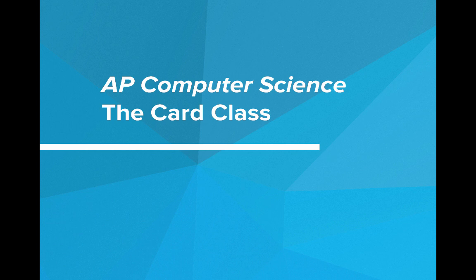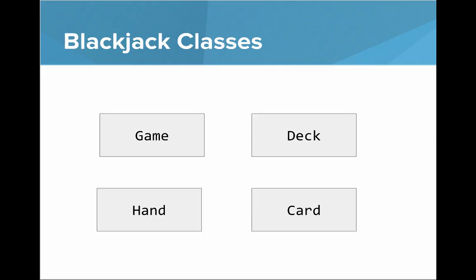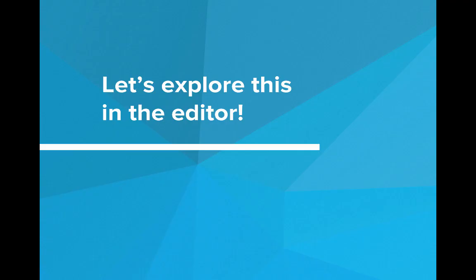In these next few videos we're going to write a blackjack game using everything we've learned about data structures, classes, and program design. We're going to start off by writing the card class. Here's a quick overview of the classes we'll be writing: a card representing one card, a deck representing a deck of cards, a hand class representing a player's hand with a collection of cards, and a game class which manages the logic for playing.